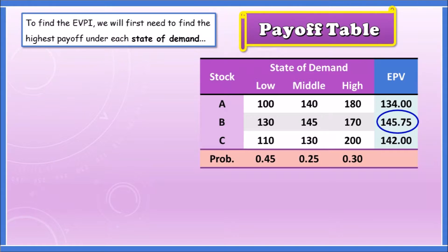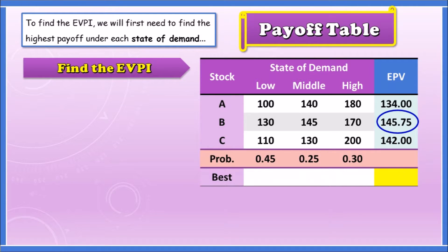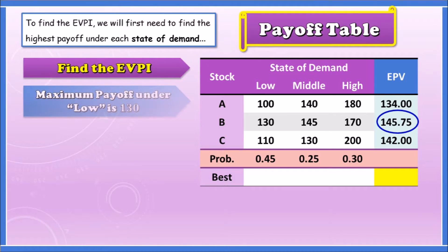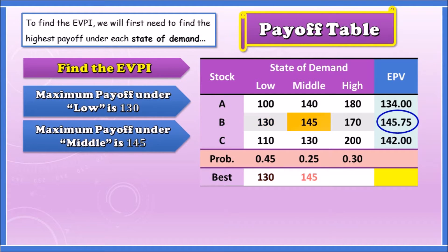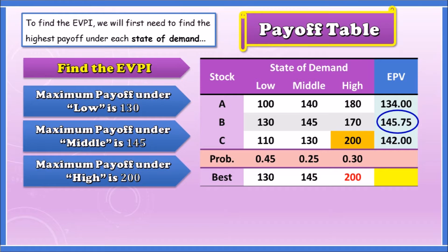Now let's move on to the expected value of perfect information using the same table. We need to find the highest payoff under every single state of demand. For the low state, Stock B gives 130, which is greater than Stock A and Stock C — so that's our best. For middle, it's 145, which is larger than 140 and 130. For the high state, it's no longer Stock B — Stock C gives 200, so that's the best payoff there.